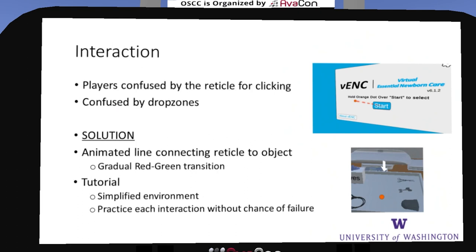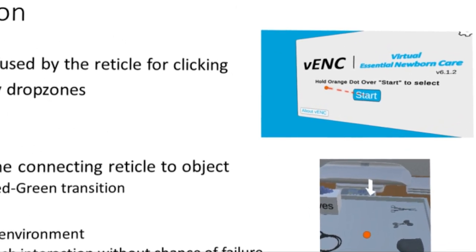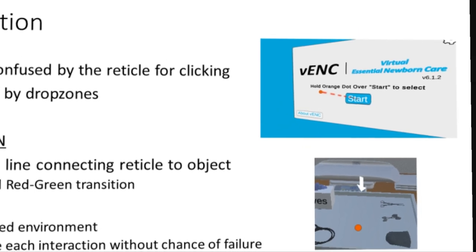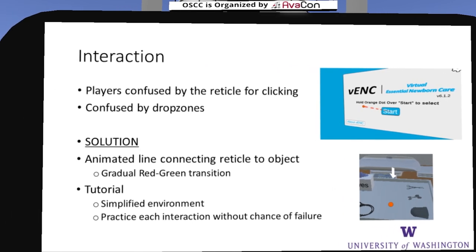Right off the bat, not most users, but enough users, had trouble with even the core concept of holding a reticle over an object to interact with it. We thought a simple instruction — 'hold the orange dot over the start button to select' — would be a sufficient tutorial introduction, but that was definitely not enough. We wound up having to draw an animated line between the reticle and the object we wanted them to click on, with a color-change system indicating warmer or colder proximity. Even once they got the idea of clicking, that didn't necessarily translate to interacting with objects in the actual game space.